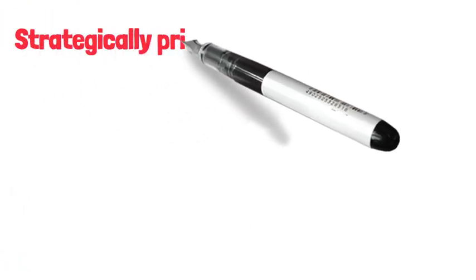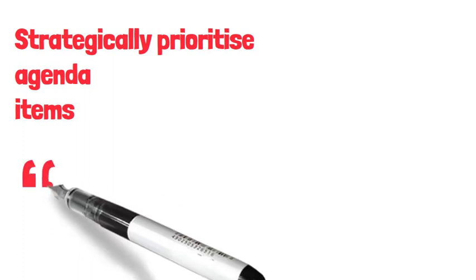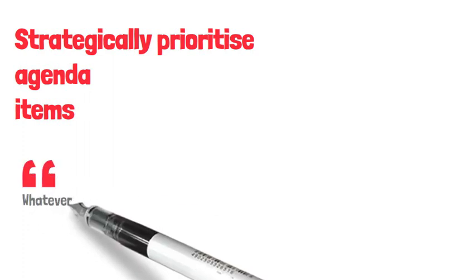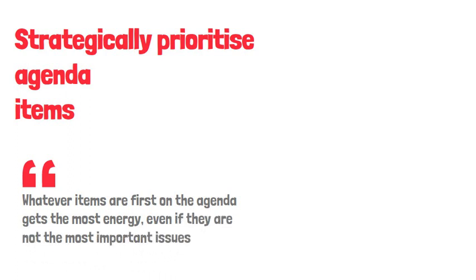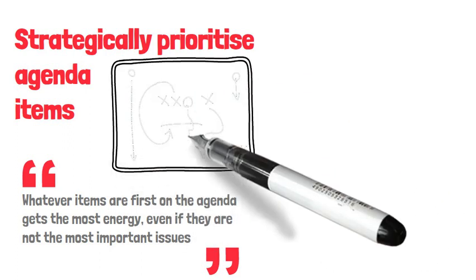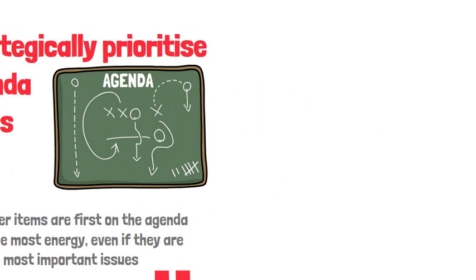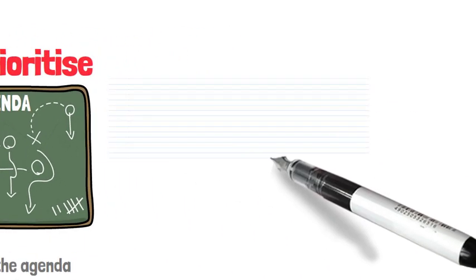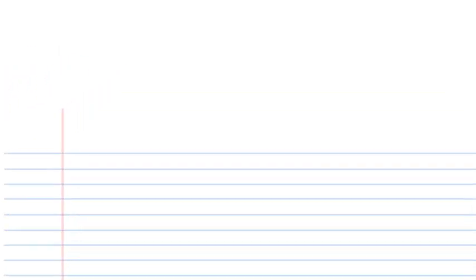Sixth, strategically prioritize items. Studies of meetings have revealed that whatever items are first on the agenda get the most energy, even if it's not the most important issue. This suggests that the most crucial matters should go at the start of the meeting. Not only does this ensure the main problems are addressed, but it also gets participants engaged and underscores the purpose of the meeting. While it's okay to kick off with a few minutes of updates, afterwards focus on the toughest and most pertinent matters.